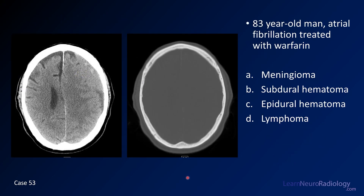Case number 53 is an 83-year-old man with atrial fibrillation treated with warfarin. There are two CT images — one in a brain window and one in a bone window. Your choices are meningioma, subdural hematoma, epidural hematoma, or lymphoma.